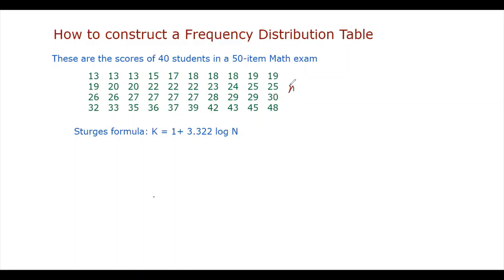So here N is 40. So for our data set, K is equal to 1 plus 3.322 log of 40. So this is 6.32. So we have approximately 6 class intervals.